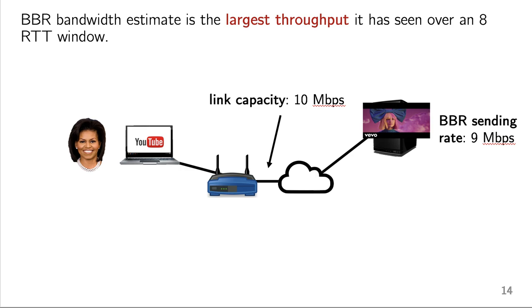So in steady state, it's just going to send at this rate. So in this example, the link capacity is 10 megabits per second. And let's say some other flows were coming and going. Maybe Michelle was browsing the web also. And so now BBR's best throughput so far that it thinks it can get is 9 megabits per second. So it's sending at this rate.